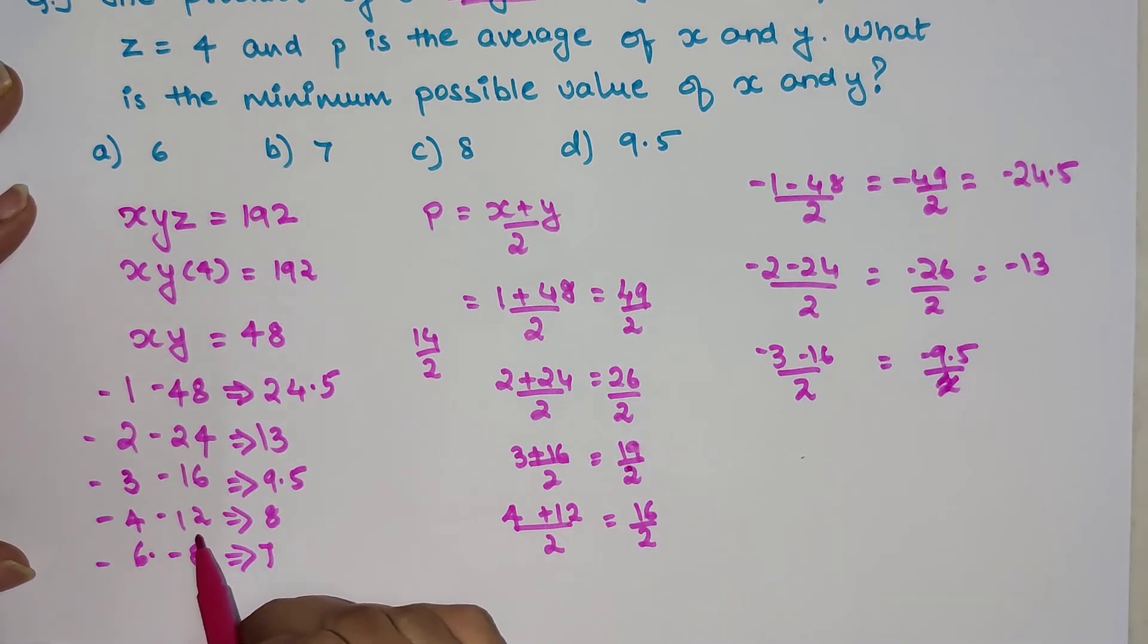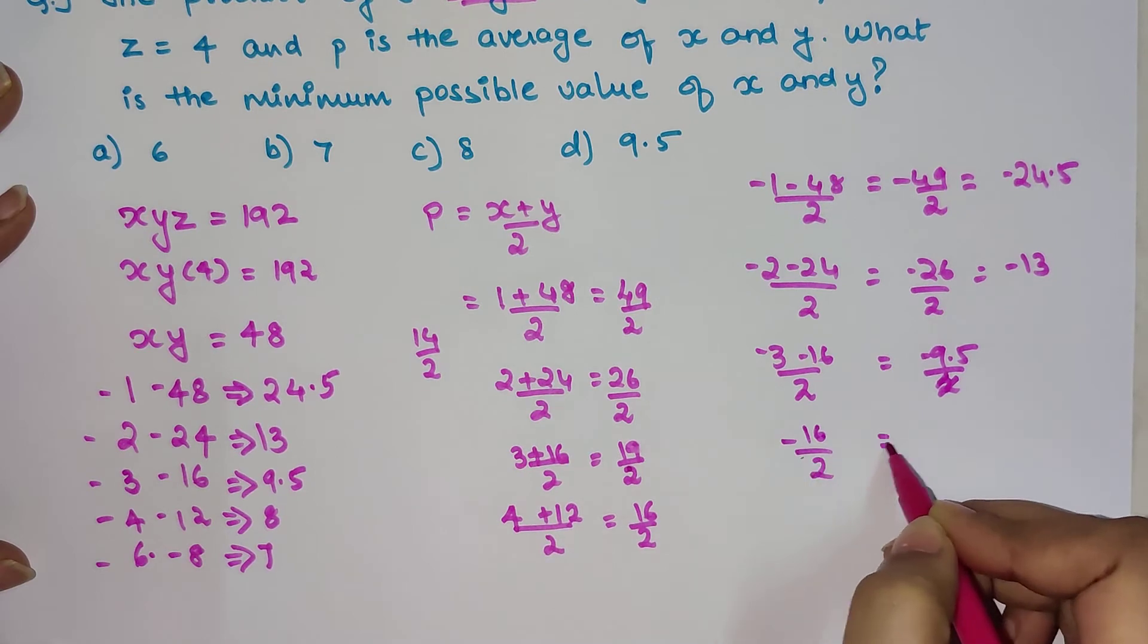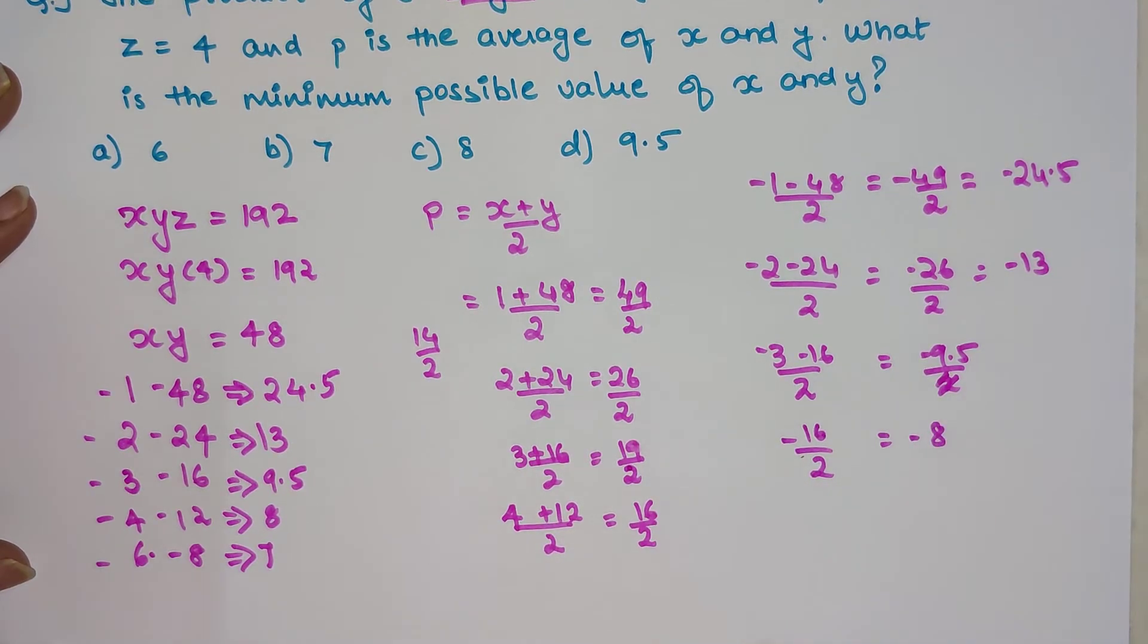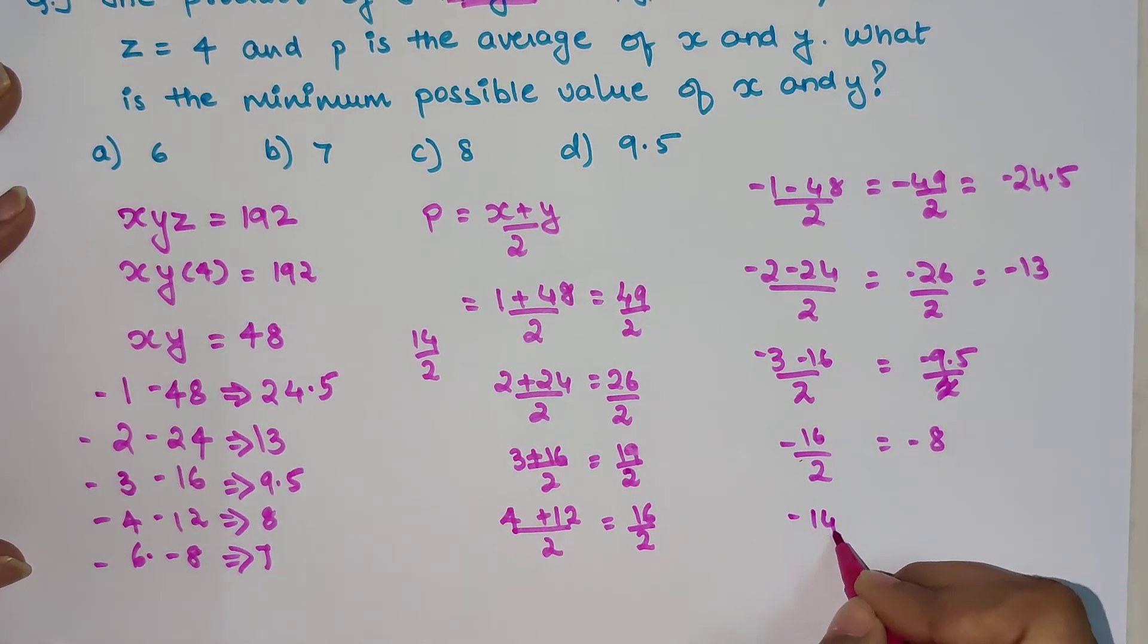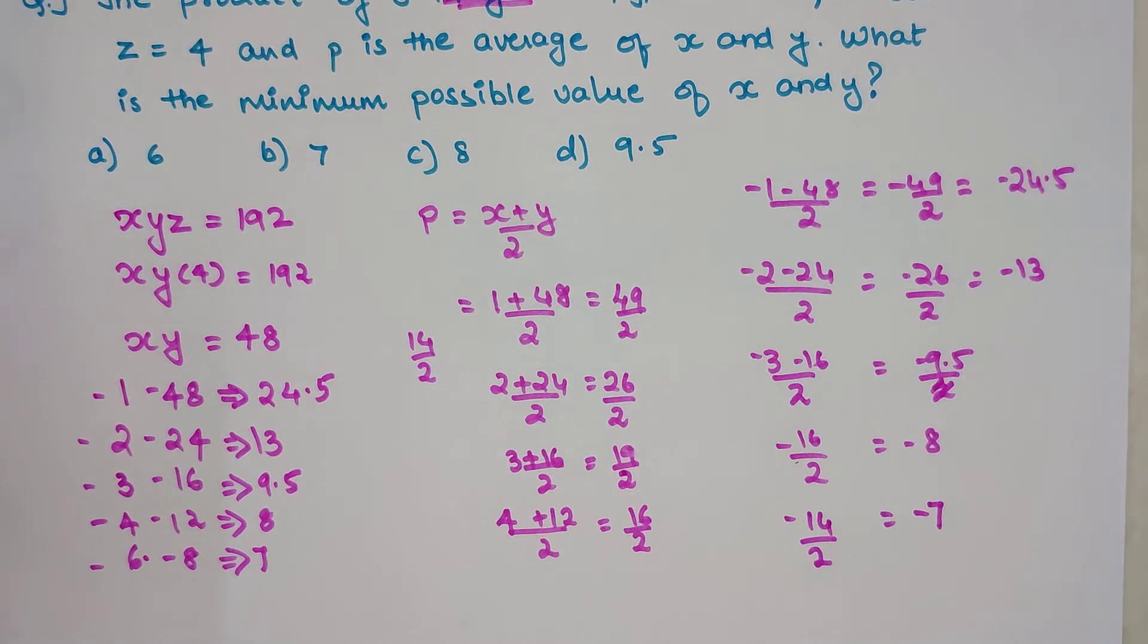Similarly, minus 4 minus 12 gets you minus 16 upon 2, that's minus 8. Then minus 6 minus 8 gets you minus 14 upon 2, that gets you minus 7.